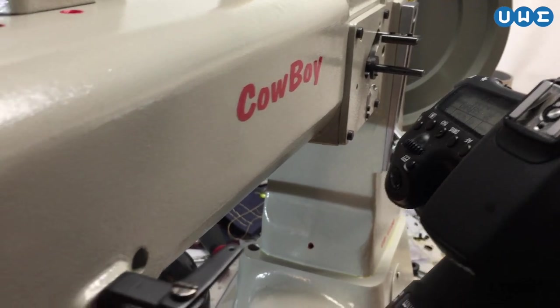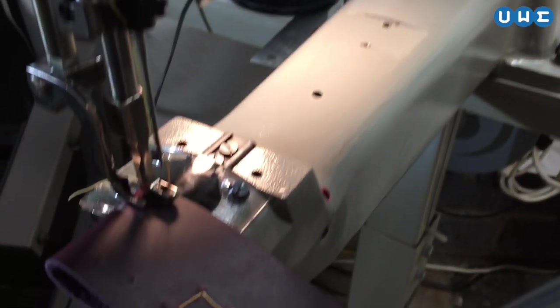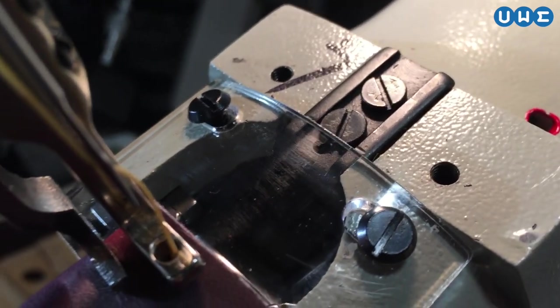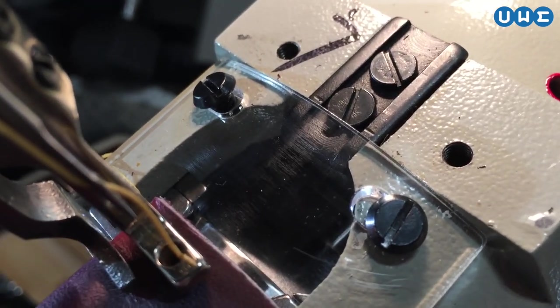Hello, this is Uwe. I'm making a small video to show how a Juki 441 class machine, in this case a Cowboy 4500, makes a stitch.